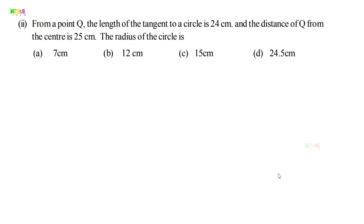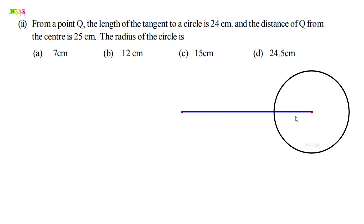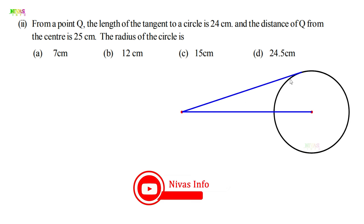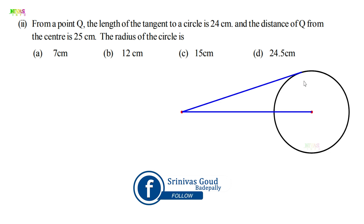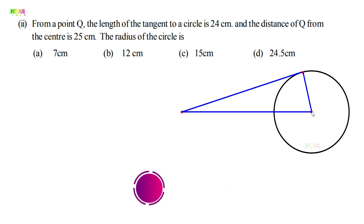Let me draw a rough figure. I have a circle here and an external point. The distance from the external point to the center is 25, and the tangent from the external point touches the circle at a point of contact. The length of the tangent — from the external point to the point of contact — is 24. The line from the circumference to the center is the radius.